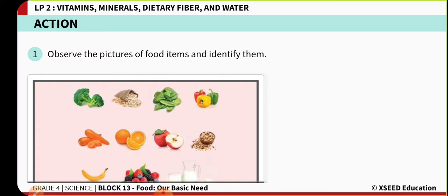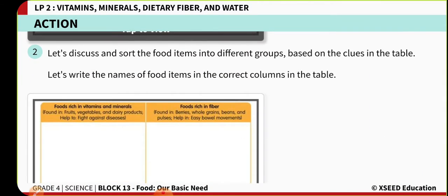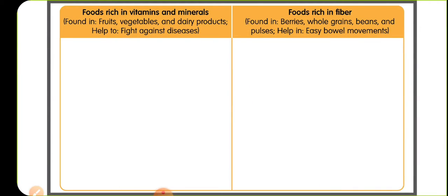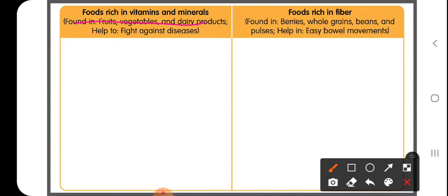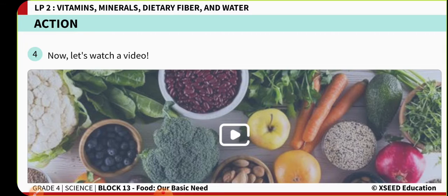Before starting our class, let us have a quick look at the activity sheet. In this activity sheet you can see so many different vegetables and fruits placed. Now we are going to separate these vegetables and fruits into two different groups: one group with foods rich in vitamins and minerals, and one group with foods rich in fiber. To differentiate them, let's watch a quick video and then come back to the activity sheet.